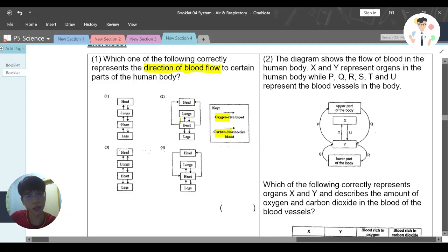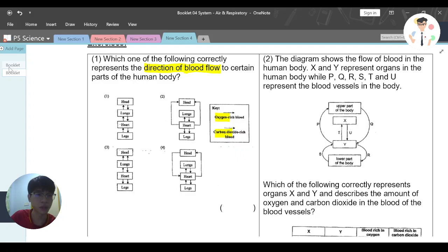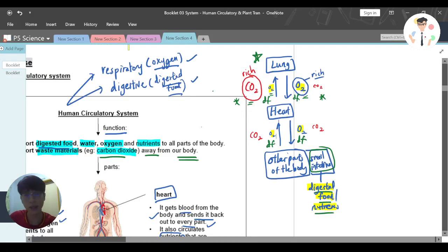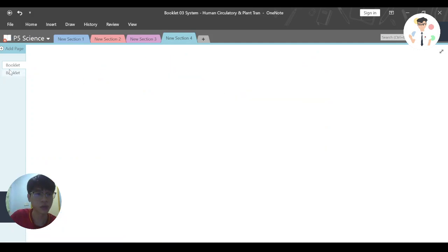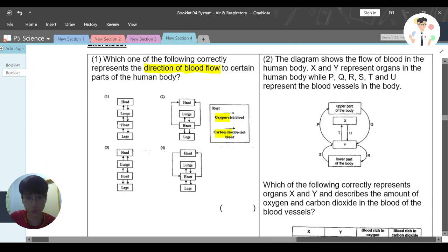I believe you still remember in booklet 3 we learned about this where we discussed lung, heart, and other parts of the body. When lungs bring in oxygen to our heart, that is where oxygen is really rich. Then slowly it will reduce, but at this moment when heart goes back to lung, this is where carbon dioxide is rich in carbon dioxide.